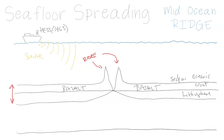It's very thin — on average five to seven kilometers thick. This is different from the continental crust, which can average 25 to 30 kilometers thick. So we have our oceanic crust and below that we have our asthenosphere.